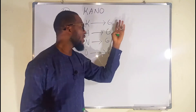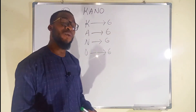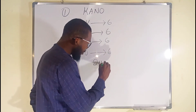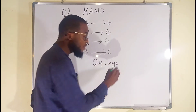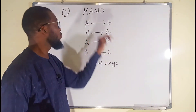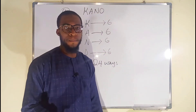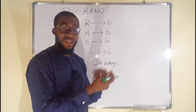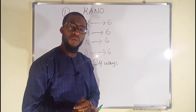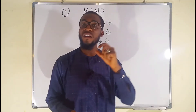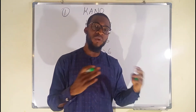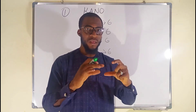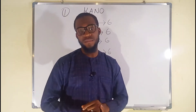By the end of the day, if you add all of these numbers, you have 24. Therefore, we have 24 different ways in which we can arrange the word Kano. But do we really need to do all of this computation? No, because there are N factorial different ways of arranging N objects considering N at a time.